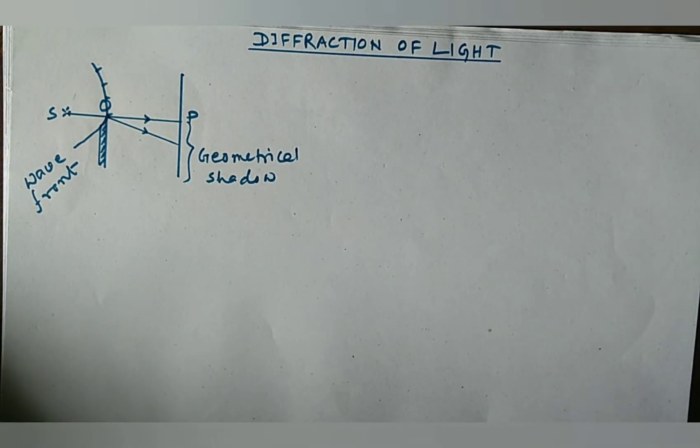Thus, we may say that diffraction is a special kind of interference of light. That is, the interference of the secondary waves coming from different parts of the same wavefront.